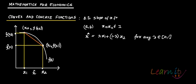You pick up this x-hat, and the value of the function at x-hat is f(x-hat). The coordinates of this point on the function are (x-hat, f(x-hat)).